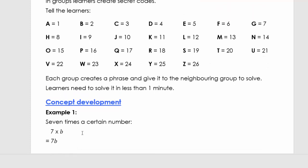Let's quickly look at this first example. First, we're going to look at seven times b. Seven times b we can also write it as 7b. So when you see something like 7b, it means the same as seven times b.